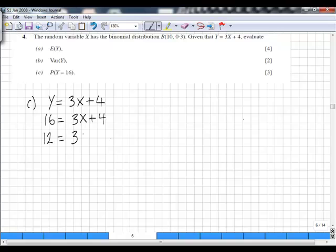That would lead us to solving that 12 is 3x, so 4 is equal to x. Now we can use that value of x because that is part of our binomial distribution given up here. And we need to now find the probability of x equaling 4.